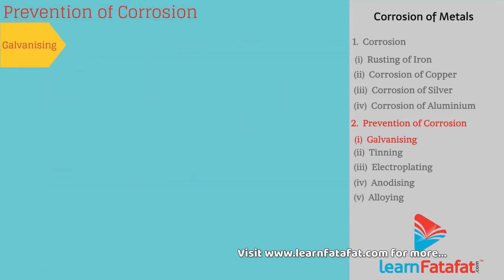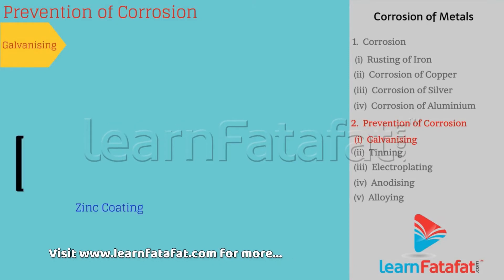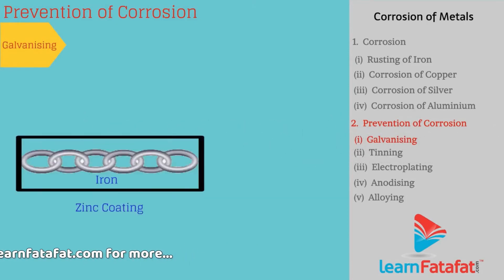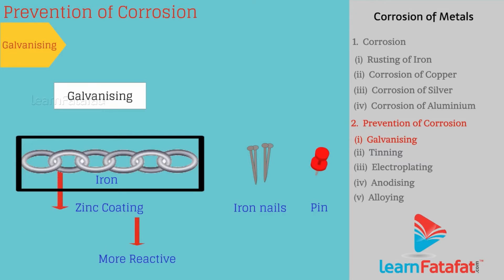Galvanizing: The process of forming a thin coating of zinc on iron or steel is called galvanizing. For example, shiny iron nails, pins, etc. Since zinc is more reactive than iron, it gets corroded first, thereby preventing corrosion of iron.